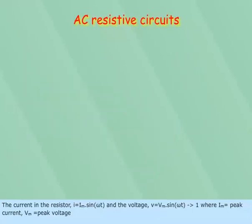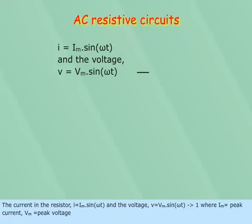The current in the resistor I equals I_m multiplied by sin omega t and the voltage V equals V_m multiplied by sin omega t equation 1, where I_m equals peak current and V_m equals peak voltage.